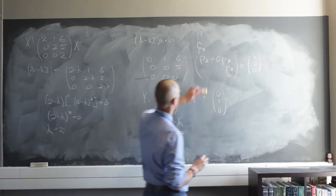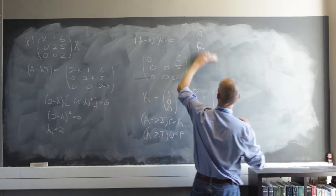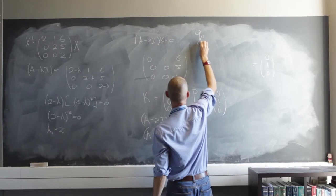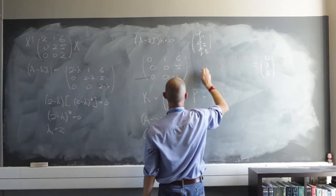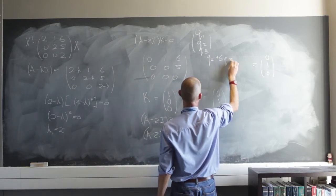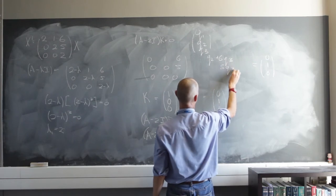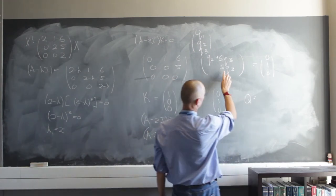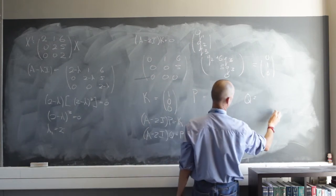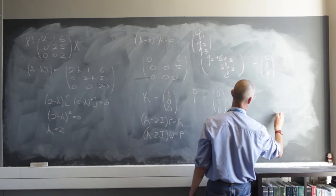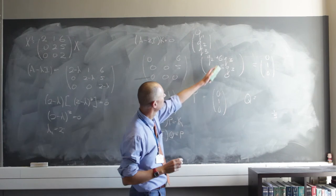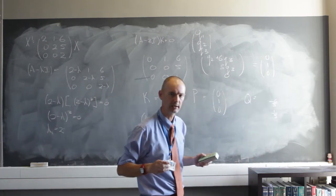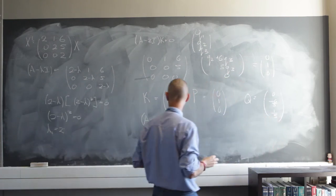Since this is multiplicity three, I'll have to go to q, and A minus 2I times q equals p. The right-hand side becomes [0, 1, 0]ᵀ. The system gives: q sub two plus six times q sub three equals zero, and five times q sub three equals one. So q sub three equals one over five. That makes six times q sub three equal to six over five, so q sub two is negative six over five. Again, q sub one can be anything, and I'll start with zero.